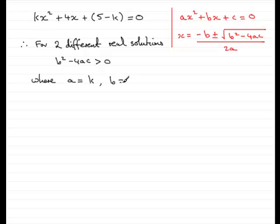And b is the coefficient of x, so that's 4. And c is the constant on the end, so c is 5 minus k.